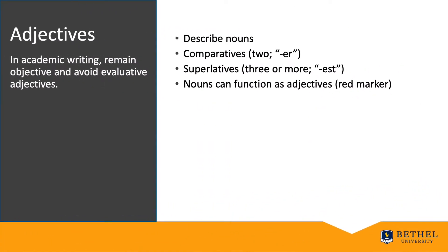Adjectives describe nouns. When we use adjectives to compare two nouns, they are called comparatives, and they usually end in -er, such as smaller or larger. We use superlatives to compare three or more nouns, and they usually end in -est, such as smallest or largest. Some nouns can also function as adjectives — for example, 'please use the red marker.' The color red is a noun, but in this sentence it functions as an adjective. In academic writing, remain objective and avoid evaluative adjectives such as 'one author provided a better argument or gave the best example.'